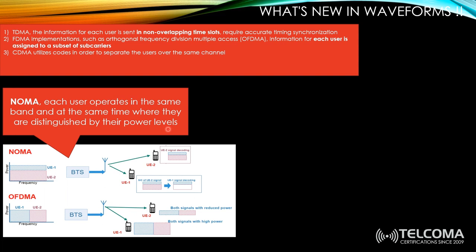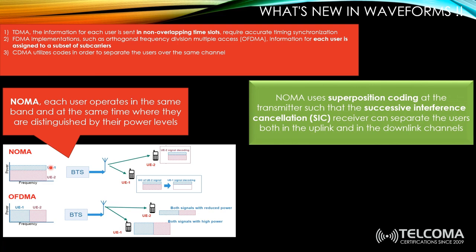In OFDMA, users have the same power due to semi-static power control in the LTE downlink. In non-orthogonal multiple access, different users use the whole frequency and the whole time simultaneously, but are differentiated by their power levels. The problem is that this requires huge computational power for the handset to differentiate between UEs.